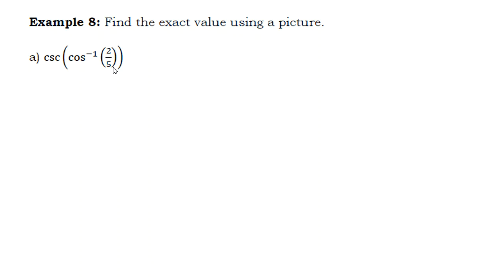So a couple things to notice that are different than the problems we've done before. This is not a special triangle value, two-fifths. So we can't really use our unit circle values. And these are not inverses of each other. So we can't use any kind of composite inverse property.